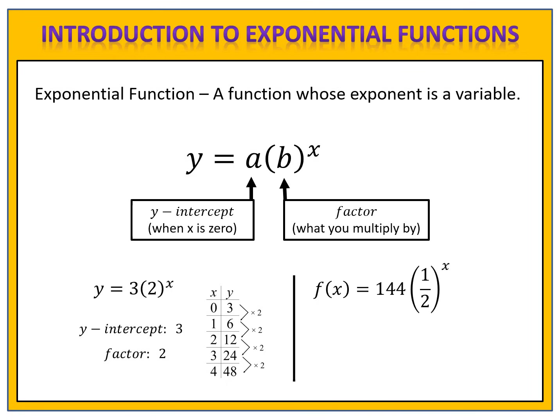Let's look at another example: f of x equals 144 times one-half to the x. Notice this time I didn't use y equals — instead I used function notation and wrote f of x equals, which means the same thing as y equals. See if you can identify the y-intercept and the factor, and then create the input and output table with the inputs going from 0 to 4. Please pause the video here and come back when you're ready to compare answers.